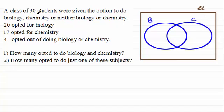Now because we've got a class of 30 students I'm going to put here in the universal set just a note that there's 30 students contained in here. And then for biology we've got 20 opted for biology so similarly I'll put 20 there and we've got 17 opted for chemistry so put that in there. We got 4 opted out of doing biology or chemistry so I know that must be 4 outside the biology and chemistry sets.